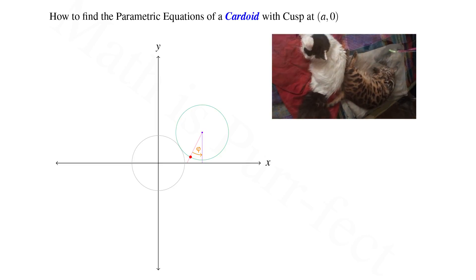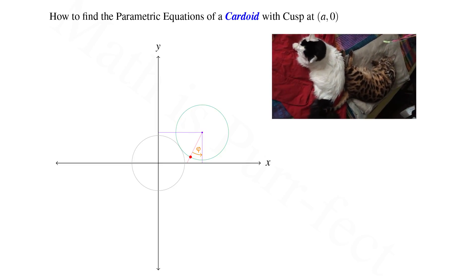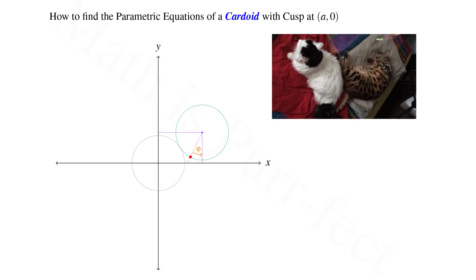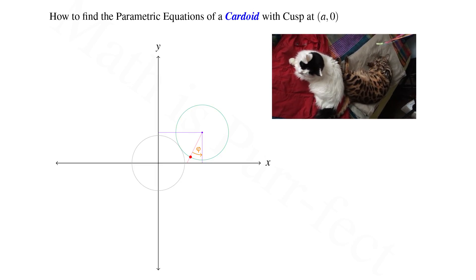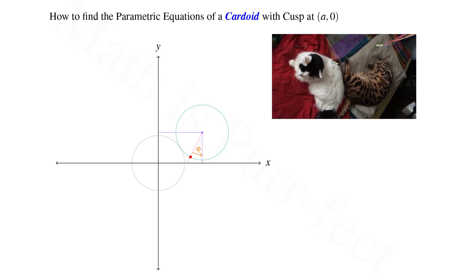As noted before, if we project perpendiculars to both axes from the center of the exterior circle, the x and y coordinates were at 2a cos theta comma 2a sin theta.